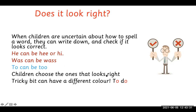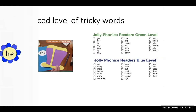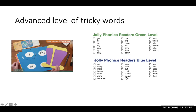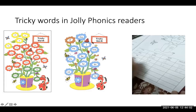Sometimes you can ask children to color the tricky bit. For example, in the word 'two,' the 'oo' is not giving the 'oo' sound — the letter 'o' is giving an 'oo' sound — so we color that part red. These are the tricky word flowers showing different levels of tricky words in the program. The advanced level goes well with the green and blue reader levels, and you can find tricky words in the readers as well.